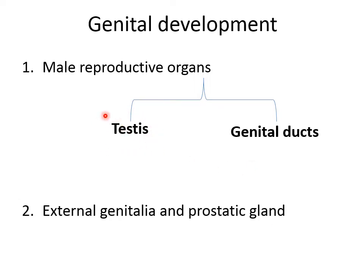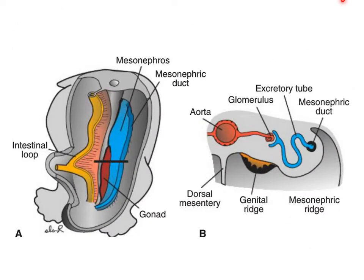The sex of the embryo is determined genetically at fertilization. The gonads appear as a pair of longitudinal ridges called genital or gonadal ridges, formed by proliferation of epithelium and condensation of underlying mesenchyme.